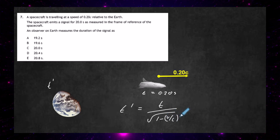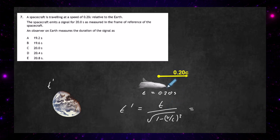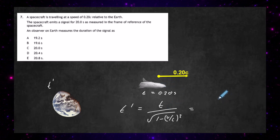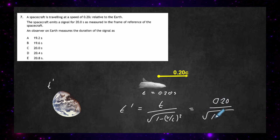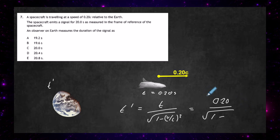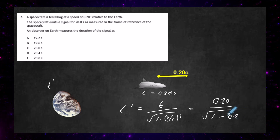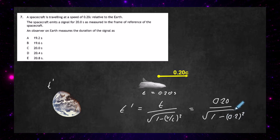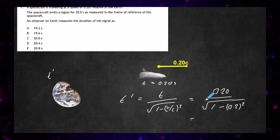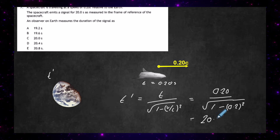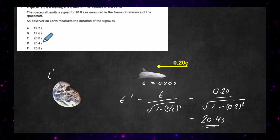We just put in the numbers: t is the time measured in the reference frame of the spacecraft, so that's going to be 20.0, divided by the square root of 1 minus — v is 0.2c but the c's cancel — so 0.20 all squared. We do that in a calculator and we end up with a time of 20.4 seconds, which gives us the answer: 20.4 seconds, and the answer is D.